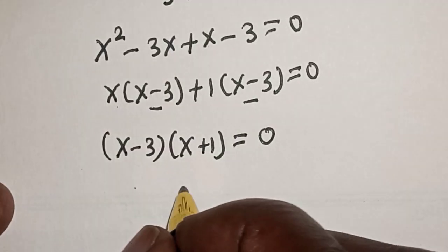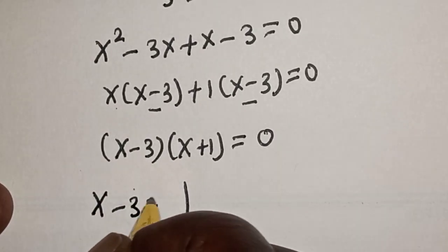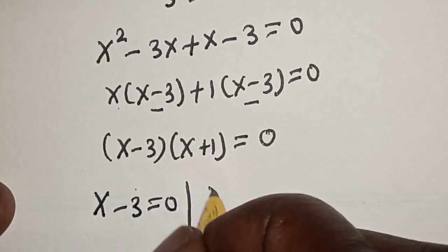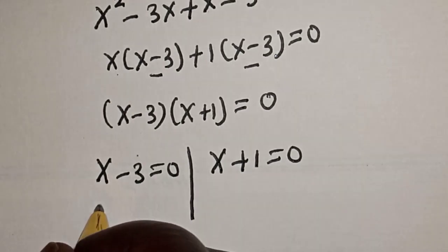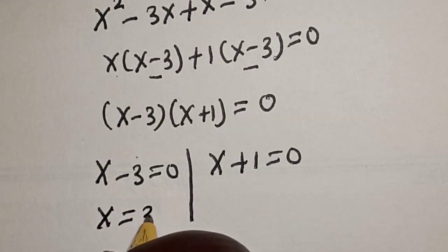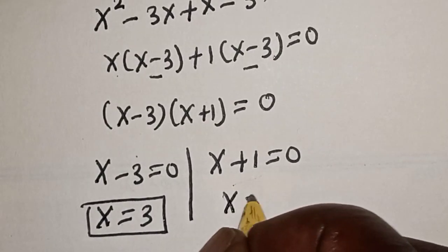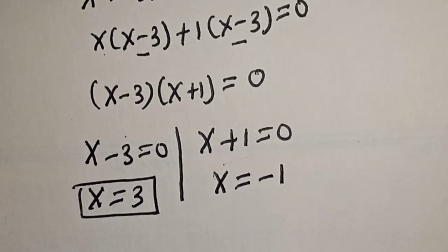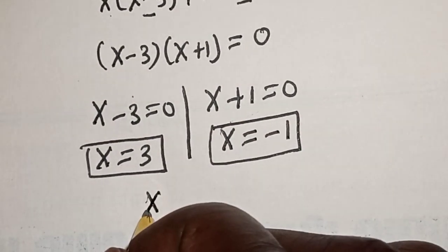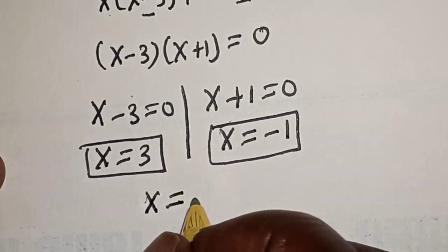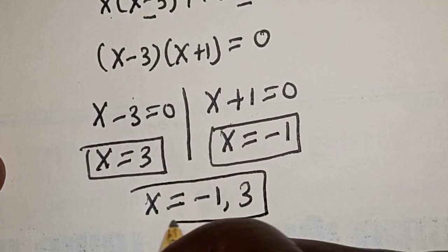Then we have two cases. s minus 3 is equal to 0, and s plus 1 is equal to 0. From the first case, s is equal to 3. From the second case, s is equal to minus 1. Therefore, our final answers are s is equal to minus 1 and s is equal to 3.